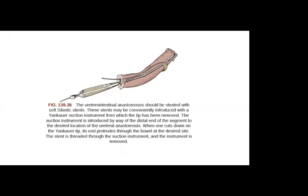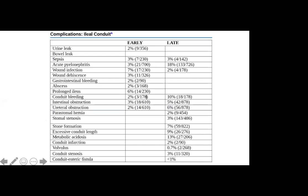You retroperitonealize the uretero-intestinal anastomosis and then eventually pull out to create a stoma at the right side beside the umbilicus. The early complication of the ileal conduit — although almost non-significant — is wound infection. However, for late complications, it's always sepsis, which is the reason for admissions for patients more than 30 days post-op.